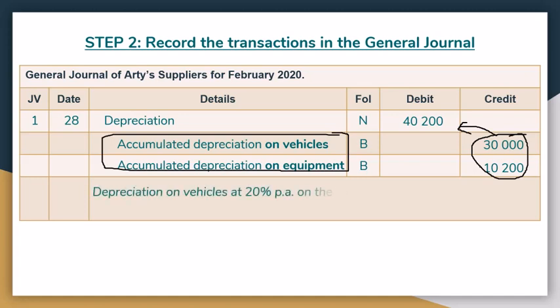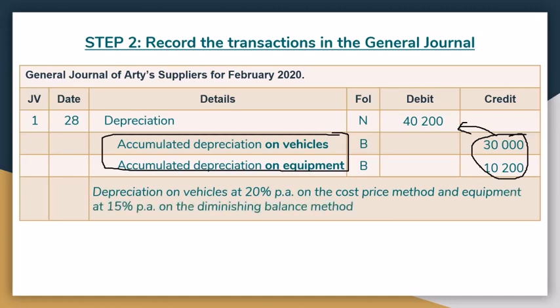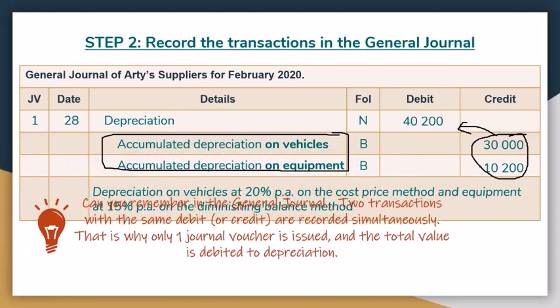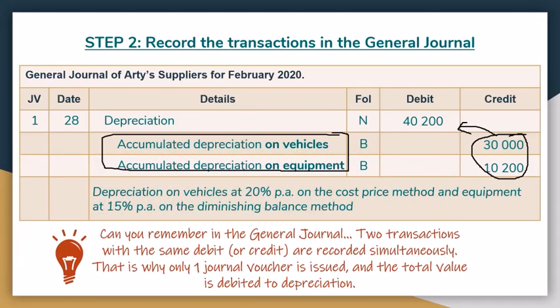Your narration will have to include the percentage and the method for both assets. So you will say: depreciation on vehicles at 20% on cost price and equipment at 15% on diminishing balance. You have to write all of that out. And remember, two transactions with the same debit are recorded simultaneously — that's why you only have one journal voucher.